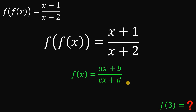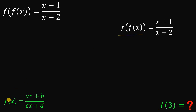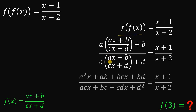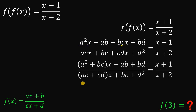So we say the general form of f of x is equivalent to a x plus b all over c x plus d. The goal is to find a, b, c, and d. Let's apply f of f of x: substitute a x plus b over c x plus d into itself, replacing all x with a x plus b over c x plus d in both numerator and denominator. Then multiply numerator and denominator by c x plus d to simplify.